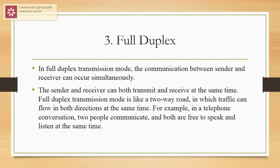Full-duplex. In full-duplex transmission mode, the communication between sender and receiver can occur simultaneously. The sender and receiver can both transmit and receive at the same time. Full-duplex transmission mode is like a two-way road, in which traffic can flow in both directions at the same time. For example, in a telephone conversation, two people communicate and both are free to speak and listen at the same time.